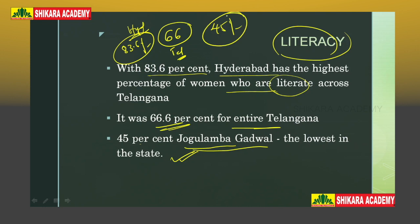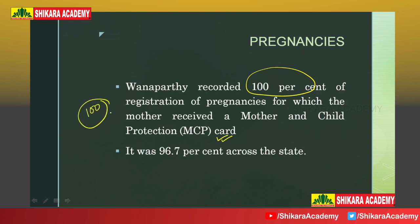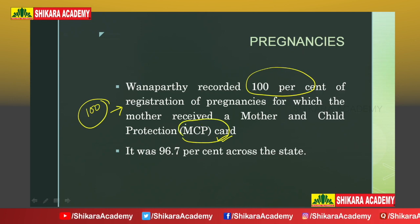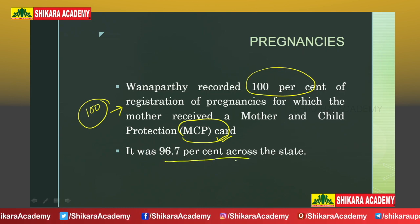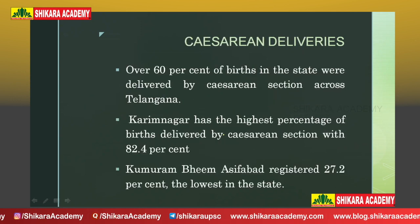Moving to the next indicator — pregnancy registration. Vanaparthi district has recorded a fabulous 100 percent registration of pregnancies, for which the mother received a Mother and Child Protection (MCP) card. Across the state, it is 96.7 percent, which means more pregnancies are being registered in Telangana.